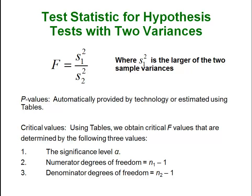Your significance level is alpha as always. The degrees of freedom for the numerator is n-sub-1 minus 1, and for the denominator it is n-sub-2 minus 1. So your degrees of freedom are still n minus 1 — you just use the individual n's for each of the two groups.